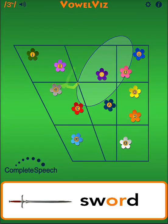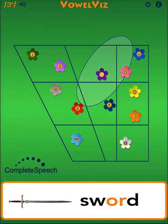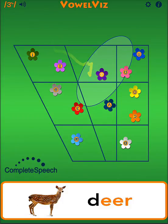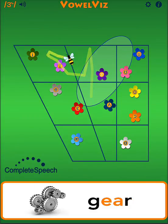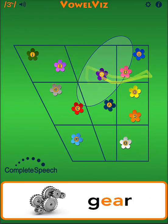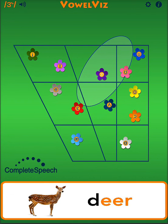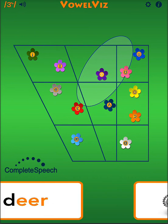EAR and ER are both front vowel vocalic R's, so the tracking B will transition from the left, or front, to the R. EAR is the combination of the high front I and R. EAR, dear, gear. Poor articulations of EAR are different from R and OR, because in mispronunciations of EAR, the tracking B will go into the target range but will continue through to the other side of the screen. EAR, dear, gear.